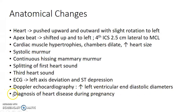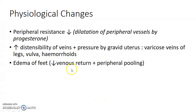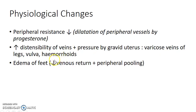Remember, these changes should be borne in mind before diagnosing heart disease during pregnancy. Now coming to the physiological changes in the cardiovascular system. The peripheral resistance falls due to the dilatation of peripheral vessels by progesterone. This causes increased distensibility of veins. The increased distensibility of veins along with the pressure from the gravid uterus causes varicose veins of the legs, vulva and the formation of hemorrhoids. Due to decreased venous return and peripheral pooling, there can be edema of the feet. Remember, this edema is physiological and it usually resolves with rest.